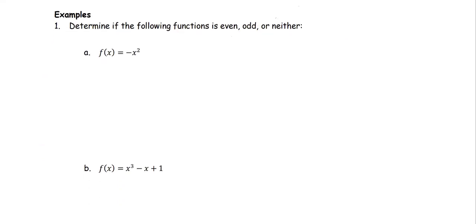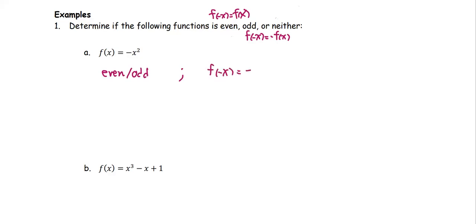Let's look at the examples. For number one, we are going to determine whether the following function is odd, even, or neither. To check for an even function, we replace x with negative x — the result should be exactly the same as the original function. For odd, the result should be the opposite. Starting with part k: f(x) = −x². We replace x with negative x, so we get −(−x)² = −x², which looks exactly the same as the original function. Therefore, this function is an even function.